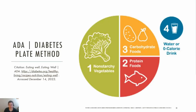Let's talk about the American Diabetes Association plate method for those with diabetes. With the plate method, half the plate would be non-starchy vegetables, a quarter carbohydrates, and a quarter protein. Non-starchy vegetables are low in carbohydrates and high in vitamins, minerals, and fiber. With proteins, the goal is to emphasize those that are low in saturated fat and cholesterol — a variety of lean proteins that are plant and animal-based would be ideal.